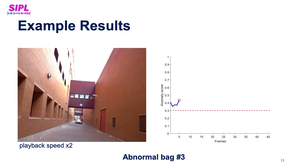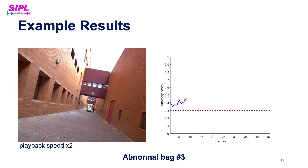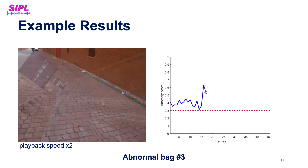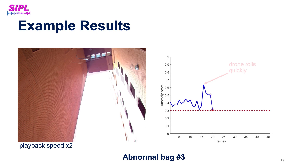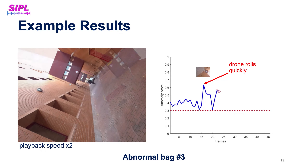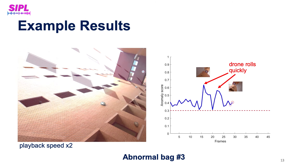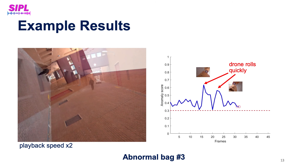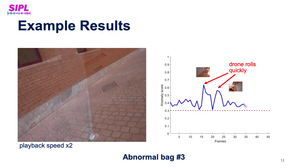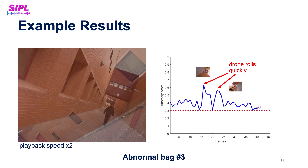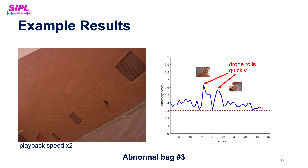Here is another video. This is an abnormal bag where the drone rolls from side to side. Our method correctly detects this bag as abnormal and also gives a higher anomaly score for the two cases where the drone rolls very quickly.